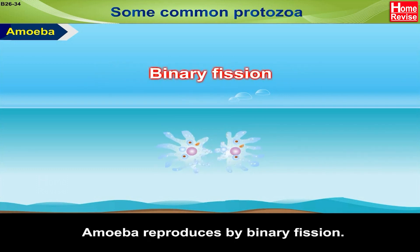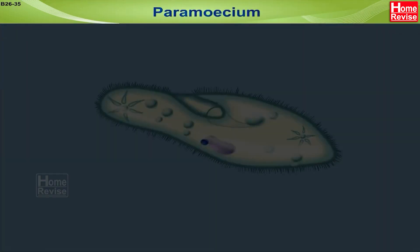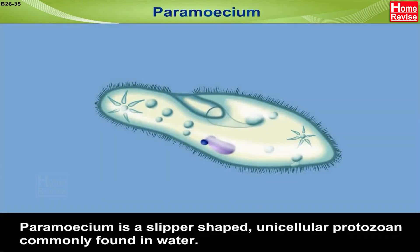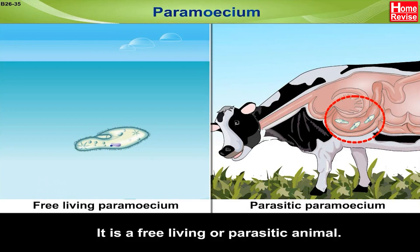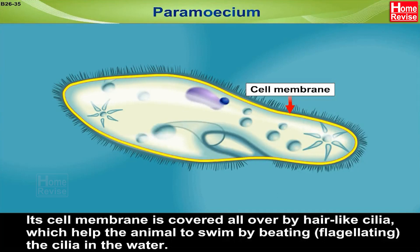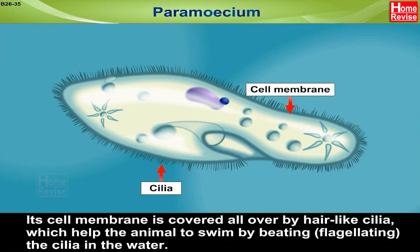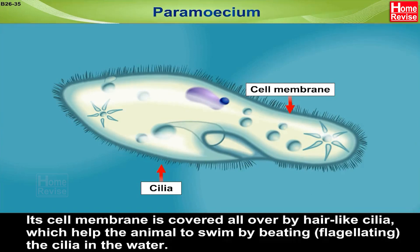Amoeba reproduces by binary fission. Paramecium is a slipper-shaped unicellular protozoan commonly found in water. It is a free-living or parasitic animal. Its cell membrane is covered all over by hair-like cilia, which help the animal to swim by beating, i.e. flagellating, the cilia in the water.